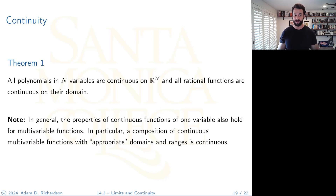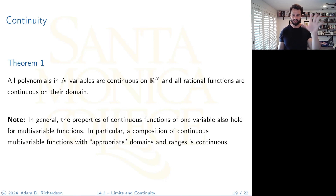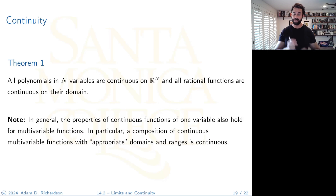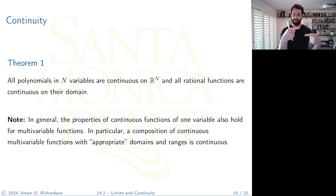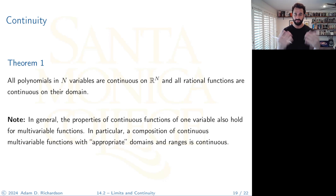The properties of continuous functions of one variable also hold for multivariable functions. In particular, a composition of continuous multivariable functions with compatible domains and ranges is continuous. Compatible means: if one function's range is [0, ∞) and the next function's domain is (-∞, -1), they don't fit together, so you can't compose them. As long as domains and ranges are compatible and functions are continuous, the composition is also continuous.